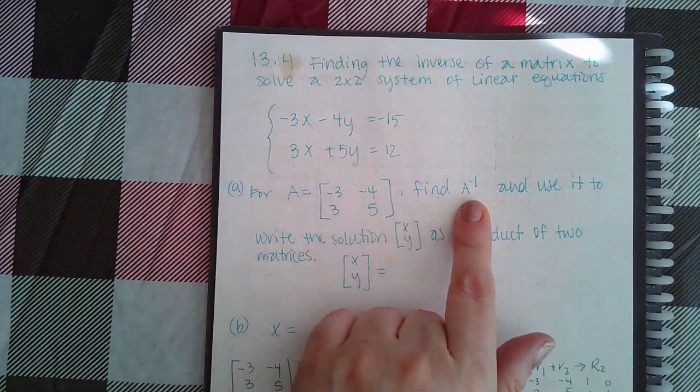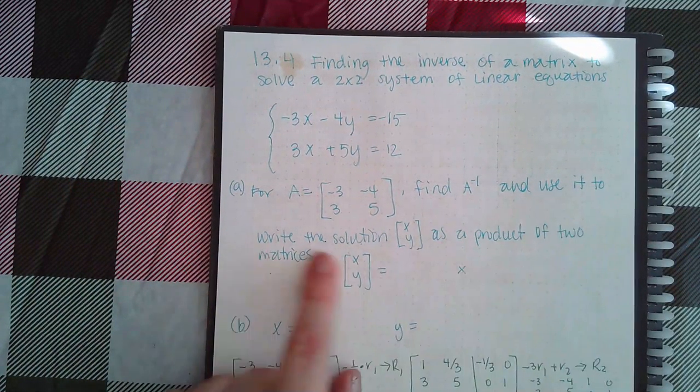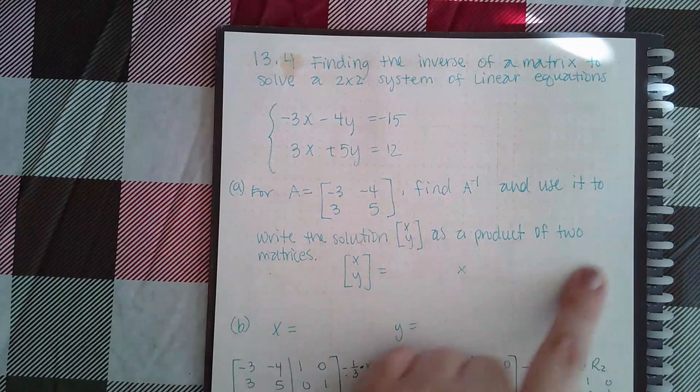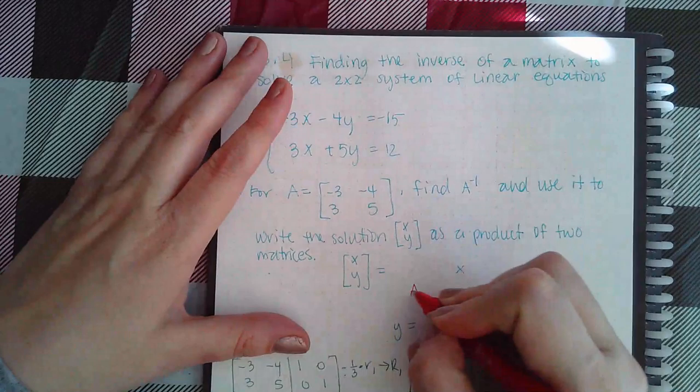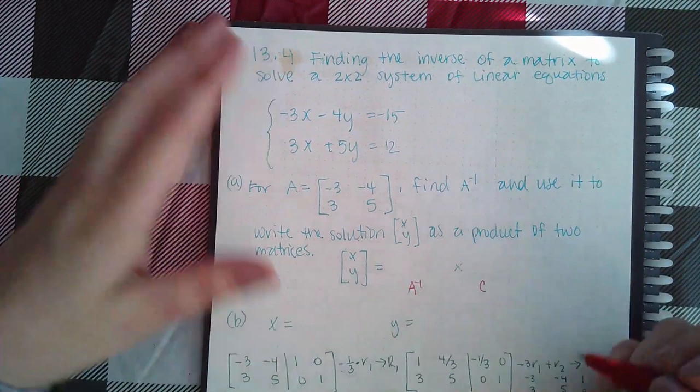They want us to find A inverse and then use it to write the solution x, y as a product of two matrices. Those two matrices need to be A inverse and then the constant matrix.